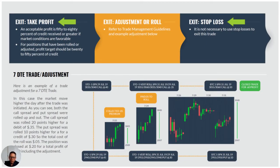There are three types of exit: an exit take profit, an exit stop loss — which doesn't pertain too much to the monthly and the seven DTE, mostly to zero DTE — and an adjustment process. This is the most important area and one you want to pay very close attention to.